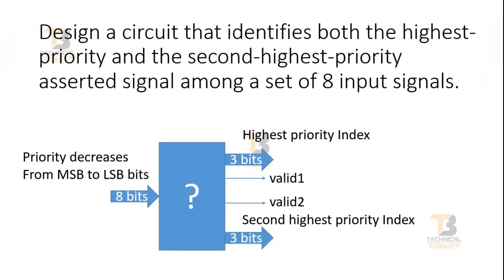Friends, the challenge is on your screen where you have to design a circuit that identifies both the highest priority and second highest priority signal among a set of 8 input signals. You have to design this question mark block. It has 8 inputs and priority decreases as we go from MSB to LSB. That means the most significant bit has the highest priority and the least significant bit has the lowest priority.